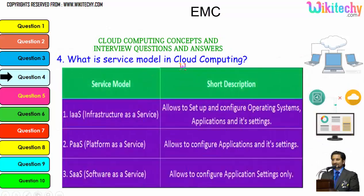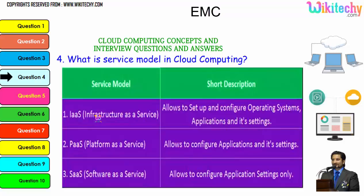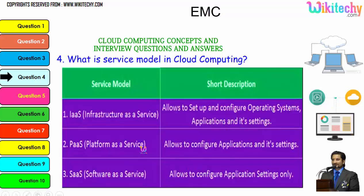The major service models in cloud computing are three. First, Infrastructure as a Service - you are allowed to set up and configure the operating system, application, and its settings; a server is given to you and you can put whatever you want. Platform as a Service - you are allocated a specified operating system and can install any applications and settings. Software as a Service - you are given a software and you can do whatever application settings you want.